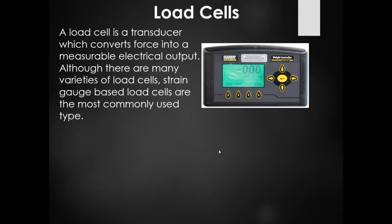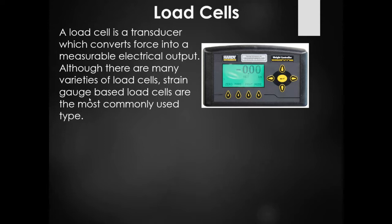Load cells are based off of strain gauges, which basically use a thin piece of wire. When you apply force to it, it gets longer and thinner, decreasing the resistance. When the weight is off of it, it gets shorter and thicker, increasing the resistance. By measuring the change in resistance, we can derive level out of it.